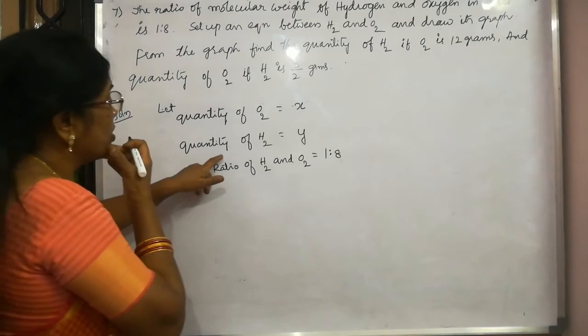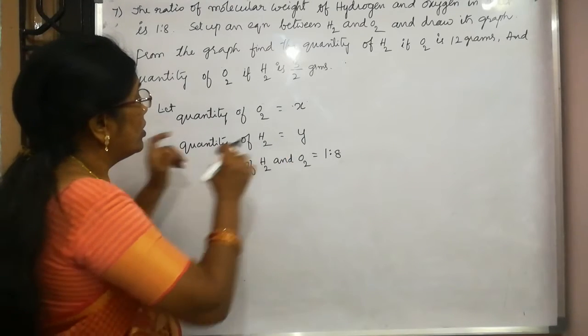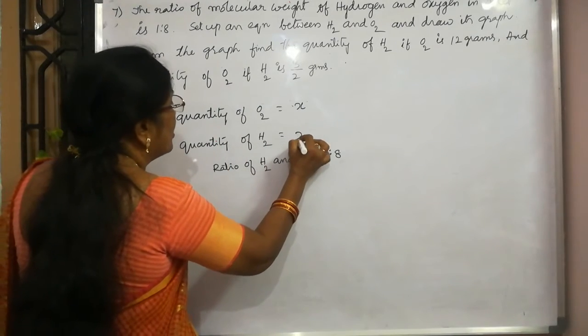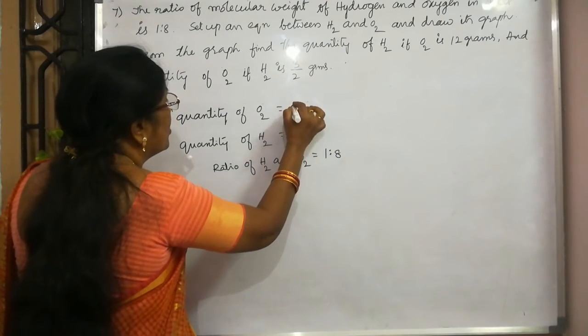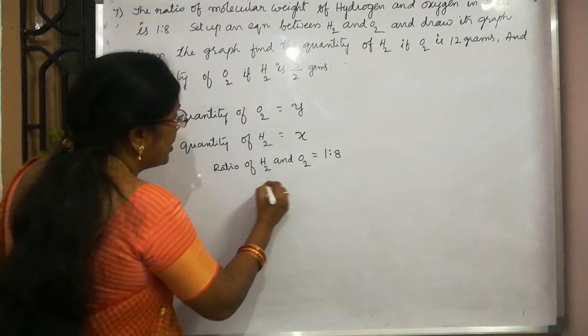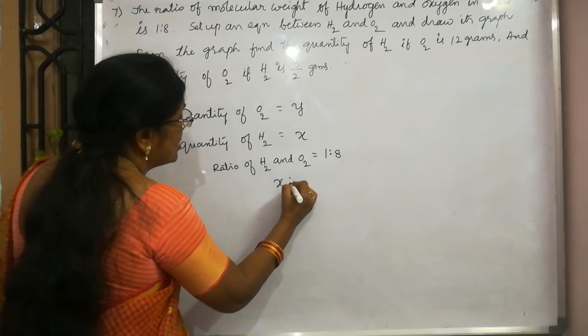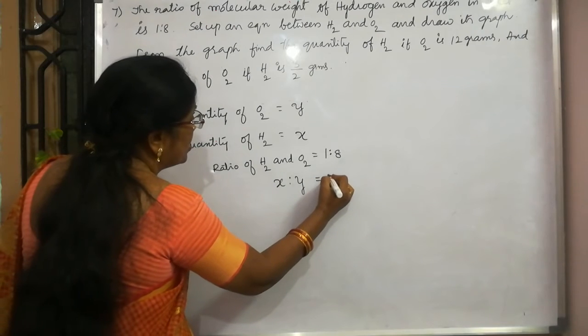Here we have supposed that quantity of hydrogen as y. Let us do this. Quantity of hydrogen is x and quantity of oxygen is y. Now, we can write this. If this is x and this is y, this is equal to 1 is to 8. So, I can write this as x/y is equal to 1/8.